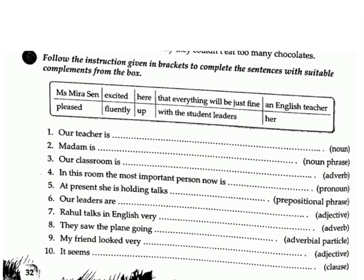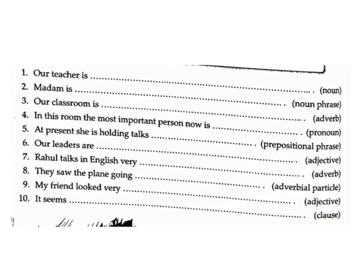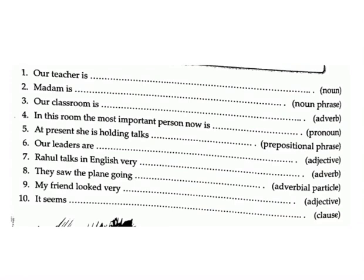Exercise I: Follow the instruction given in brackets to complete the sentences with suitable complements from the box. Options: Ms. Myra Sen, excited, hear, that everything will be just fine, an English teacher, pleased, fluently, up, with the student leaders, her. 1. Our teacher is ___. (noun) Answer: Ms. Myra Sen. 2. Madam is ___. (noun phrase) Answer: an English teacher. 3. Our classroom is ___. (adverb) Answer: here. 4. In this room the most important person now is ___. Answer: her.